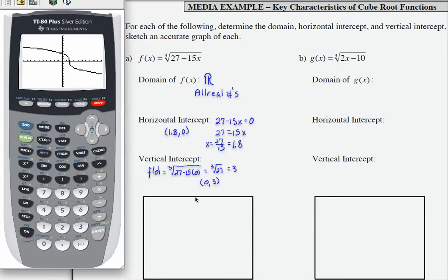And it does. So this is kind of an unusual graph, it's kind of like an S. So there's my vertical, there's my horizontal, and I'm going to just draw this shape like that, and then I'm going to identify the ordered pairs. So this is (1.8, 0), and this one is (0, 3), and this is f(x).